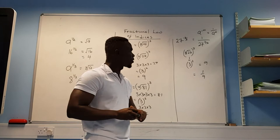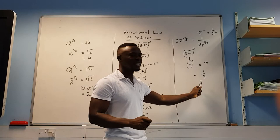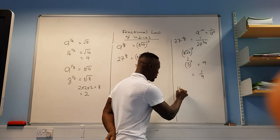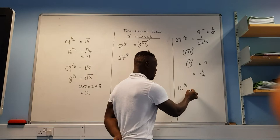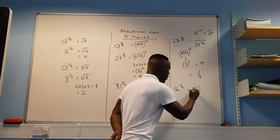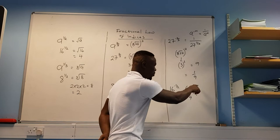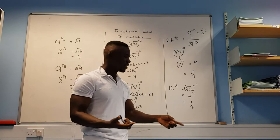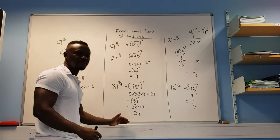Whenever the index is negative, all you do is take your final answer and put 1 on top of it. For example, 16 to the power of minus a half: take the square root of 16, which is 4, and because the power is negative, it becomes 1 over 4. Any number to the power of 1 is just that number, which is why the 4 stays as 4.